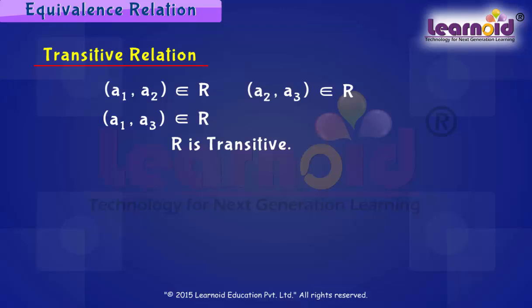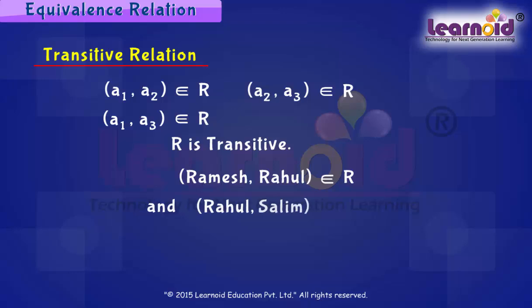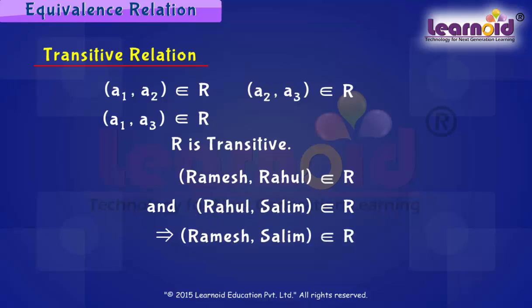For example, Ramesh is a friend of Rahul and Rahul is a friend of Salim. Then it is quite obvious that Ramesh is also a friend of Salim. If this is true, then the relation friendship is transitive.